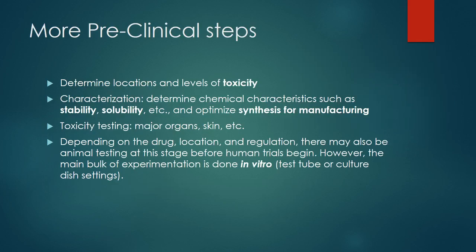Other steps during this time include finding out how toxic the chemicals are and what they're harmful to, such as the skin or major organs. Characterization means determining characteristics like how stable the structures are, how well they can dissolve, and other things. This stage sometimes has animal testing depending on regulation and drug effects, but this is becoming less common.